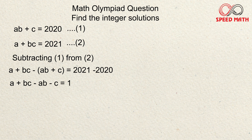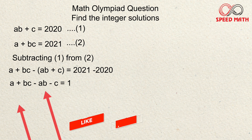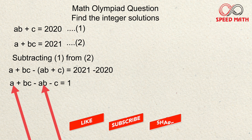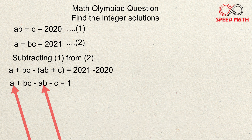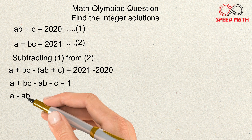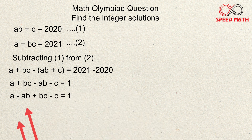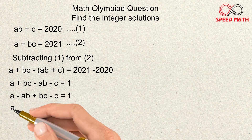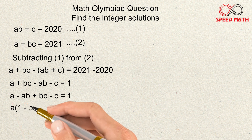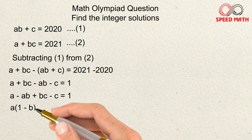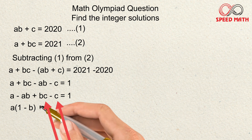Now let's rearrange terms to take something common. We group the a-terms and c-terms together: write (a − c), then the remaining terms bc and −ab. In the first group, a is common, so factoring gives a(1 − b). In the second group, c is common, so factoring gives c(b − 1).